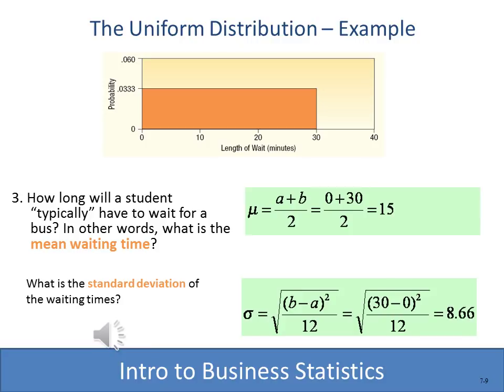Now we compute the mean, which is the expected or typical waiting time. Using A plus B divided by 2: 0 plus 30 divided by 2 equals 15. So on average, the expected waiting time is 15 minutes. The standard deviation is the square root of 30 minus 0 squared divided by 12, giving us a standard deviation of 8.66.